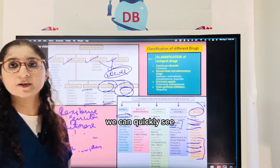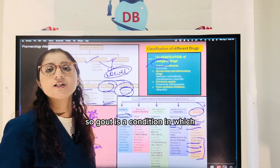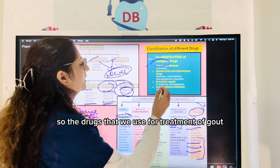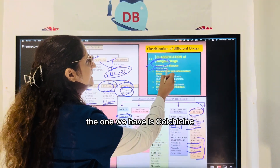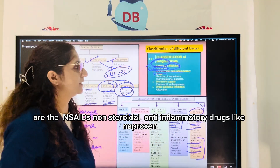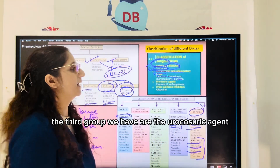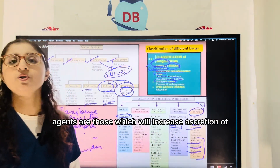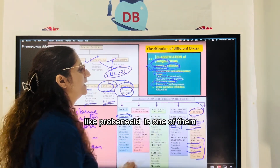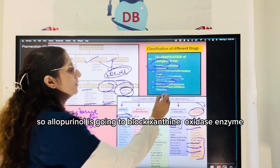Quickly, we can look at drugs used for treatment of gout — a condition involving too much uric acid accumulation. The first group is colchicine, an alkaloid. The second group is NSAIDs like naproxen, ibuprofen, and indomethacin. The third group is uricosuric agents, which increase excretion of uric acid in the urine — probenecid is one example.